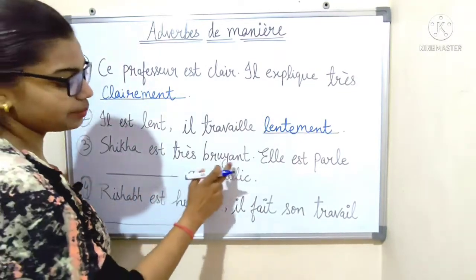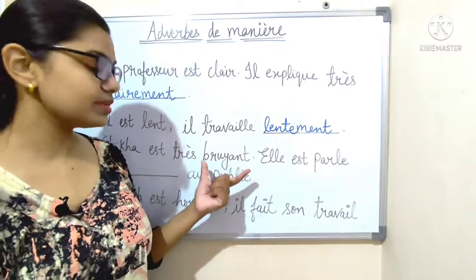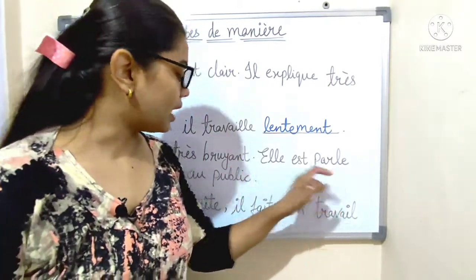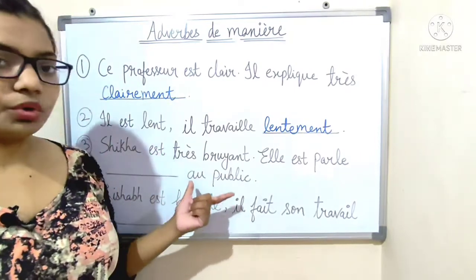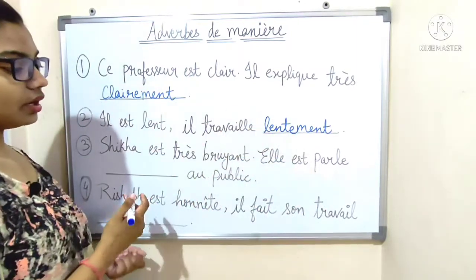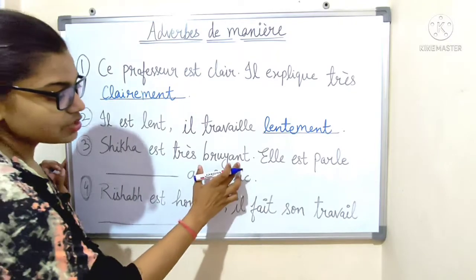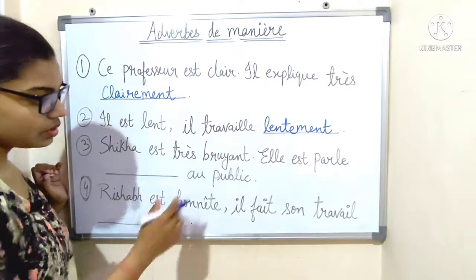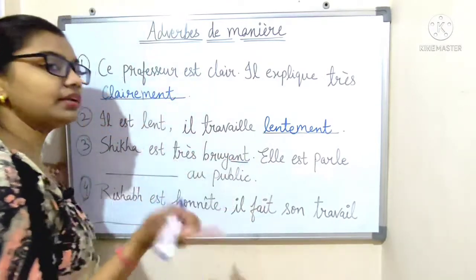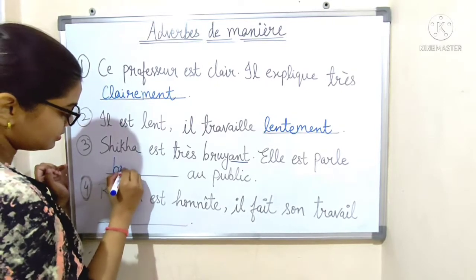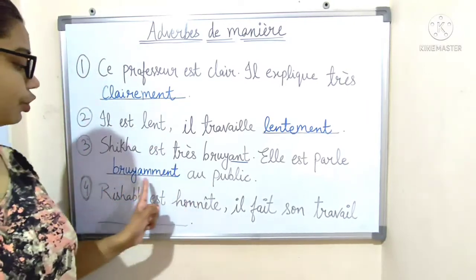Number three: 'Shikha est très bruyante, elle parle bruyamment en public.' 'Bruyant' ends with A-N-T, so we remove '-ant' and add '-amment': B-R-U-Y-A-M-M-E-N-T — 'bruyamment'. Shikha is very loud; she speaks loudly in public.